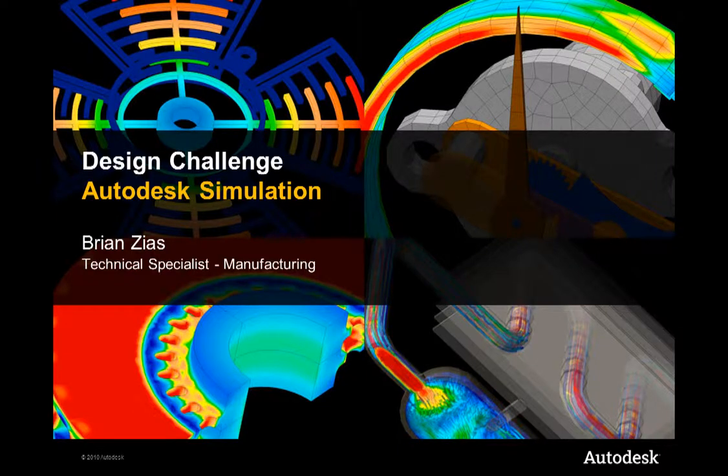Autodesk helps customers design better products by enabling them to create digital models and digital workflows that can be used to experience ideas before they're real and improve the way products look, perform, and are used in the real world. How can we help create designs that are cost-effective, safe, and reliable while increasing bottom line and shortening time to market? How are design engineers facing real-world decisions and challenges with Autodesk simulation tools? Let's see how we can apply Autodesk simulation to a few theoretical design scenarios and discover why simulation is an invaluable asset to have during the design process.